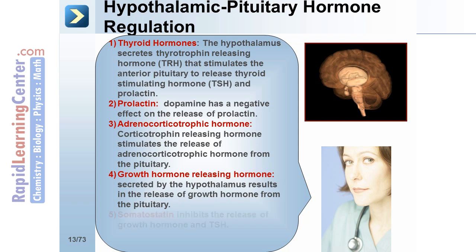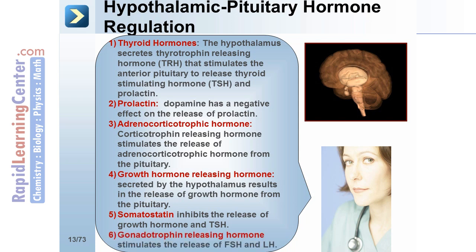Somatostatin inhibits the release of growth hormone and TSH. Gonadotrophin-releasing hormone, or GnRH, stimulates the release of FSH and LH.